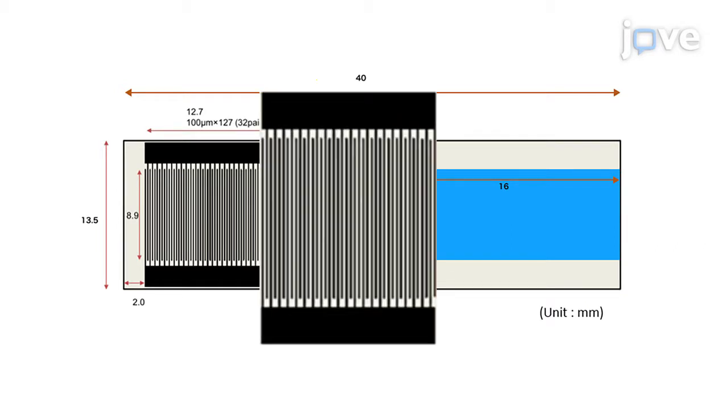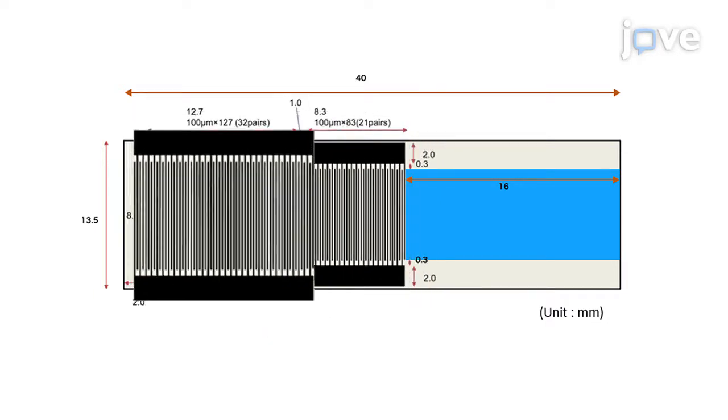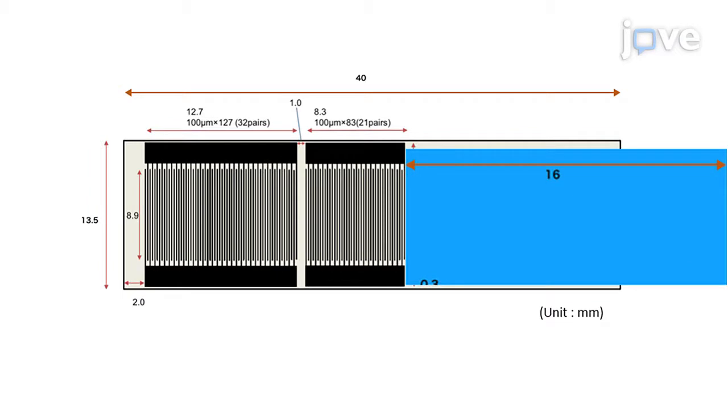The transducer region has 21 finger pairs. The reflector has 32 finger pairs. The atomization area is depicted in blue.